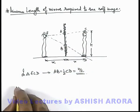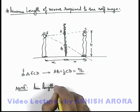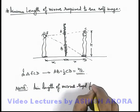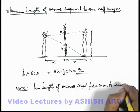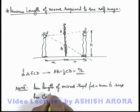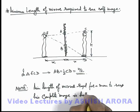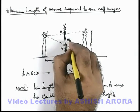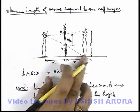So here we can write down a note: the minimum length of mirror required for a man to see his complete image is half of his height. If his height is h, then h/2 is the minimum mirror size required through which he'll be able to see his complete image.